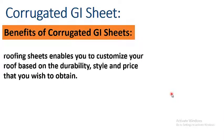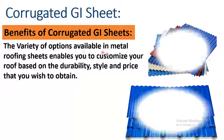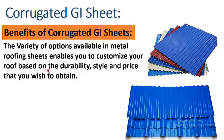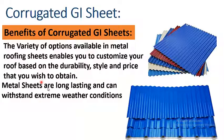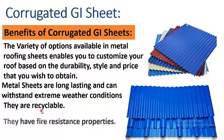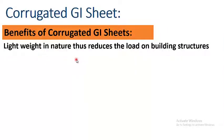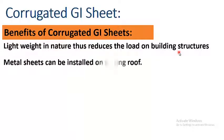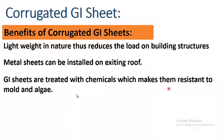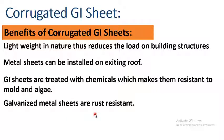There are some benefits of corrugated GI sheets. First, a variety of options are available in metal roofing sheets, enabling you to customize your roof based on the durability, style, and price that you wish to obtain. They have fire resistance properties. They are easy to source and widely available. They are resistant to mold and algae. Galvanized metal sheets are rust resistant. Maintenance cost is very low. So these were the few benefits of corrugated GI sheets.